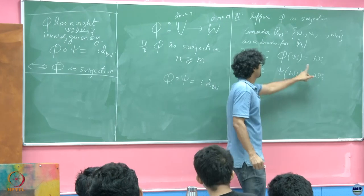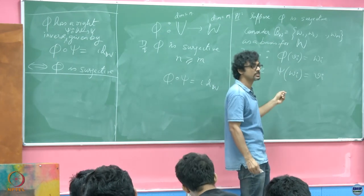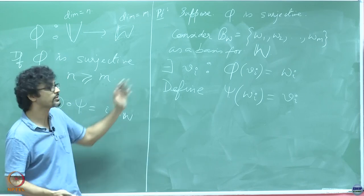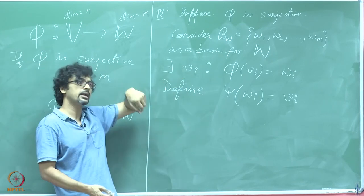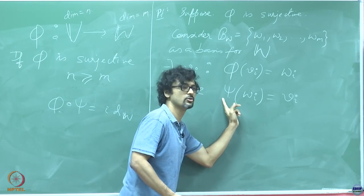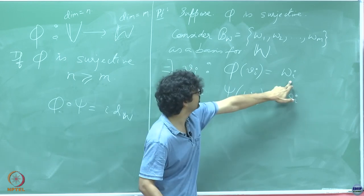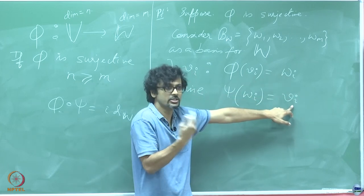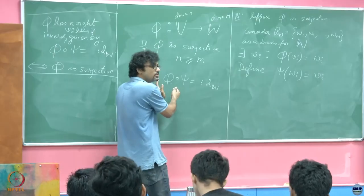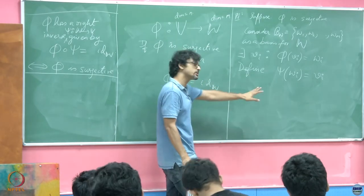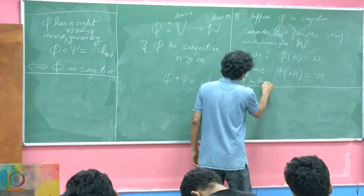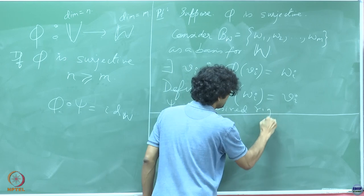Just to be sure: surjection guarantees there exists at least some v_i. Pick out any one of those v_i's which map back to w_i. If it is one-to-one, fantastic — you have an isomorphism. If not, at least you have a surjection so at least you have some v_i. Define psi(w_i) to be that pre-image. So psi is the desired right inverse, and surjection does guarantee a right inverse.